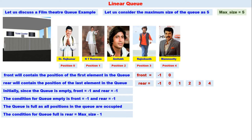The ticket counter clerk issues a ticket to Dr. Rajkumar — Annavru — and he goes inside the theater. Front should be incremented because the first person in the queue is now NT Ramrao Garu and the last person is Mohanlal sir. Therefore, front equals one and rear equals four.